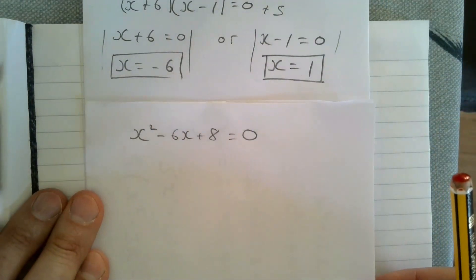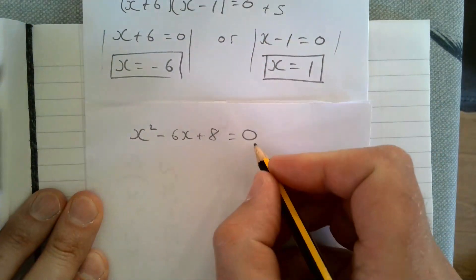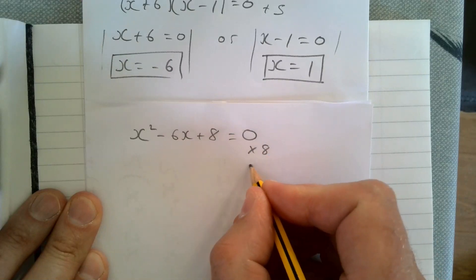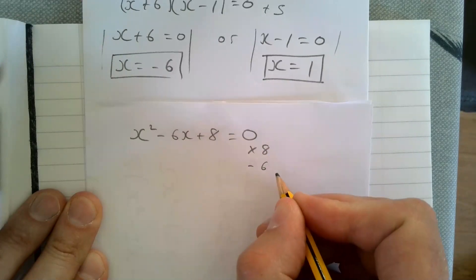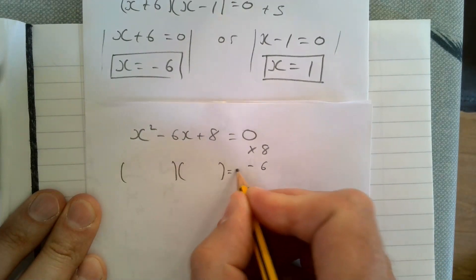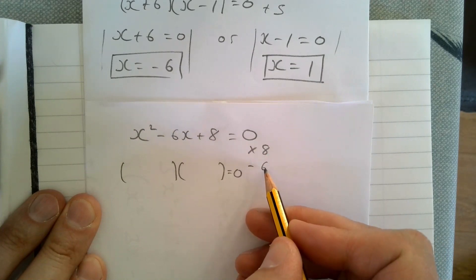Let's look at a second example: x squared minus 6x plus 8 equals zero. Taking the same format, we need two numbers that multiply together to give eight and add together to give minus six. If they multiply to give a positive and add to give a negative, they have to be two negatives.